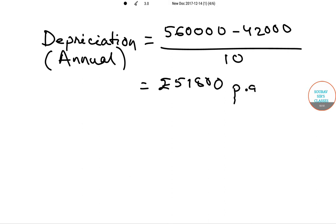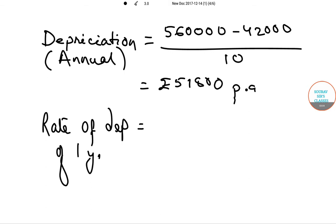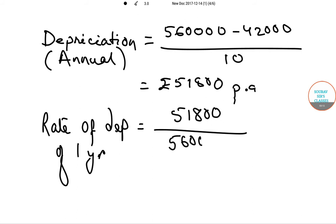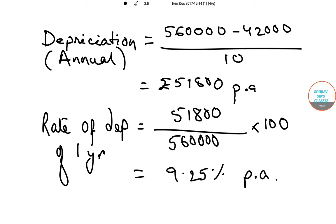Now we need to get the rate of depreciation per annum. Rate of depreciation equals annual depreciation divided by the original cost, multiplied by 100. This gives us a rate of depreciation of 9.25% per annum.